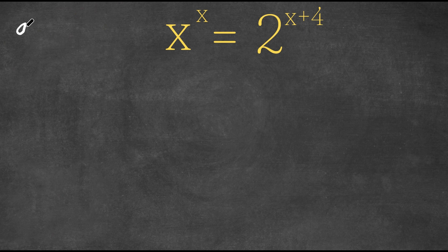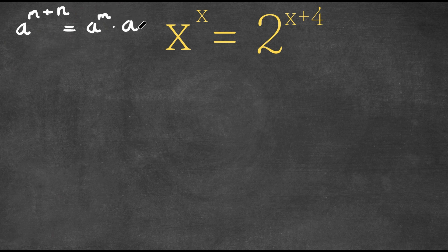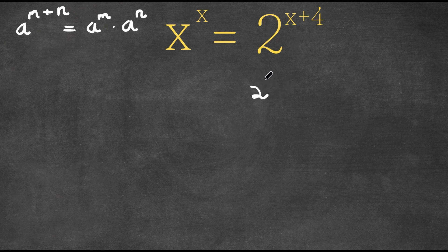If we have something in the form a to the power of m plus n, this can actually be written as a to the power of m times a to the power of n. The exponents are essentially distributed to the base. So we're going to apply this to 2 to the power of x plus 4, which means it equals 2 to the power of x times 2 to the power of 4.